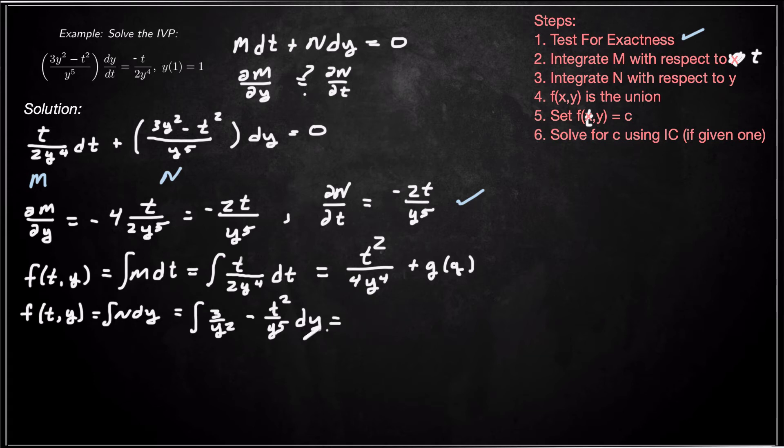And then integrate with respect to y. We get, let's see, so integrate the first one, 3/y³. We get -3/2 times 1/y². And then integrate the second one with respect to y. We get positive 1/4 times t²/y⁴ plus maybe something that only depends on x.